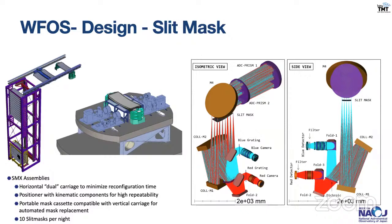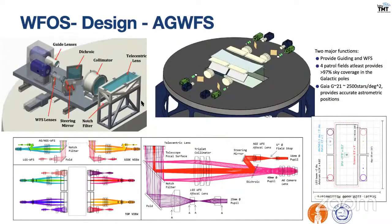One person manually loads the slit mask cassettes, which then slowly move up into the carriage. From the carriage, the required slit mask comes and positions itself at the focal plane. The slit mask is sized slightly larger than the field of view, which is 8.3 by 3 arcminutes square.